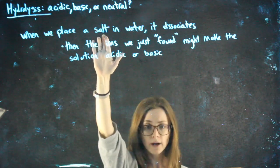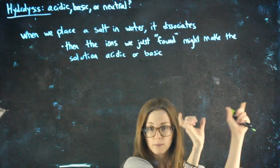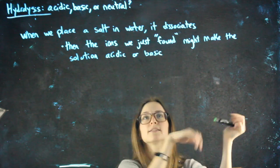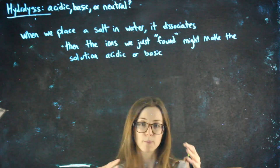So when we place that salt in water and it dissociates, the ions that we just found, the products of that dissociation that you just practiced, that's where the hidden acid or base might be.